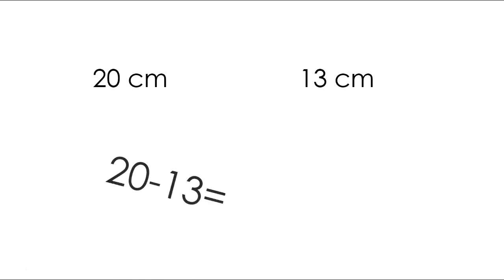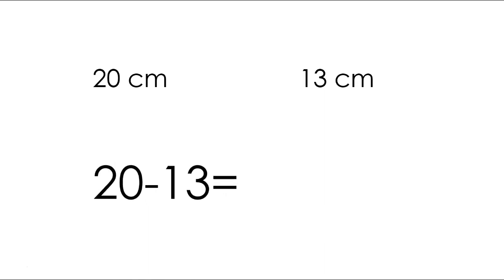We have 20 centimeters and 13 centimeters, and we need to find the difference. Go ahead and circle the longer one. Did you circle 20 centimeters? Good job. Go ahead and write your number sentence and complete it — push pause, then push play when you're done. Did you get 20 minus 13? And 20 minus 13 equals 7 centimeters. The difference between 20 centimeters and 13 centimeters is 7 centimeters — give yourself a kiss on the brain!